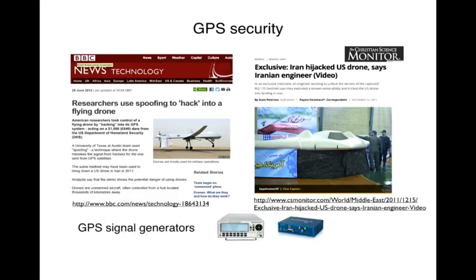How can you do these attacks? It's actually not very difficult. You use devices called GPS signal generators — essentially test equipment able to generate wireless signals that correspond to what a GPS satellite would generate. If you're creative enough, even if your GPS receiver receives legitimate GPS signals, you can still shift the computed location to somewhere else.